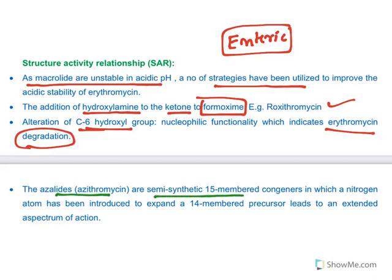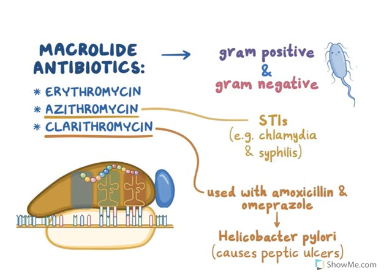The azalides - as we have seen, azithromycin is a semi-synthetic 15-membered azalide in which a nitrogen atom is introduced, and that has resulted in extended spectrum of action. So addition of nitrogen increases the spectrum of activity.